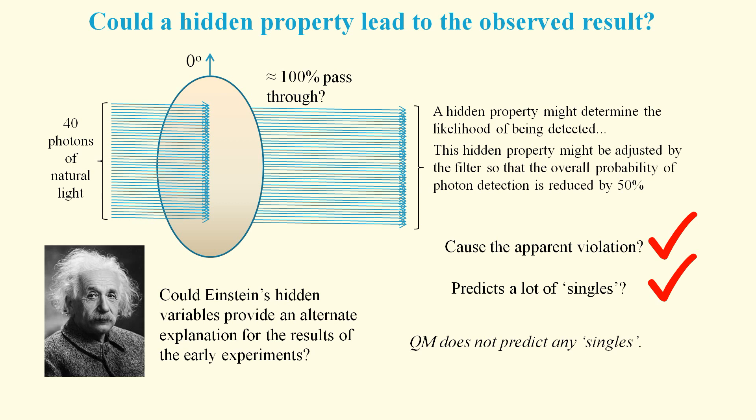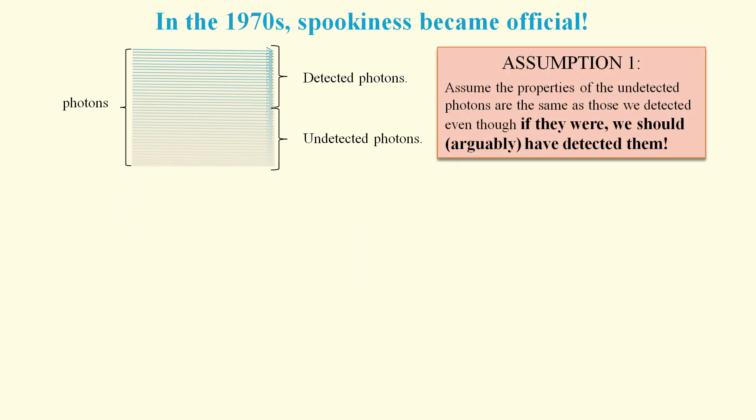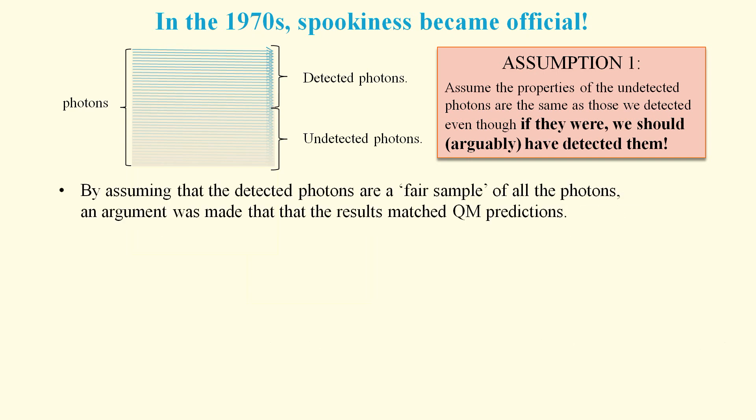The very first Bell test experiments were also photon-based, and so you might well wonder why a classical physics explanation was dismissed. Well, the undetected photons were dismissed as not being important. They made the assumption that undetected photons had the same properties as the detected photons, which seems a bit strange. Surely it would be more reasonable to assume they had different properties, otherwise they should have been detected. It was claimed that the detected photons were a fair sample of all the photons.